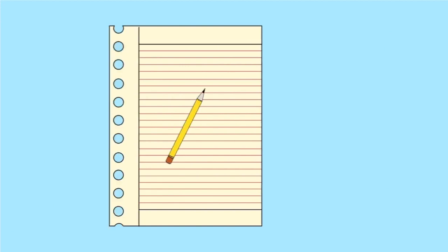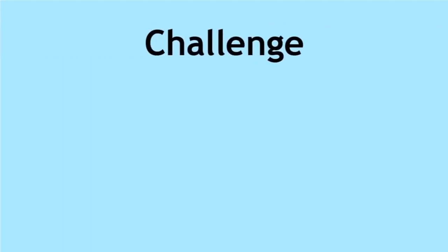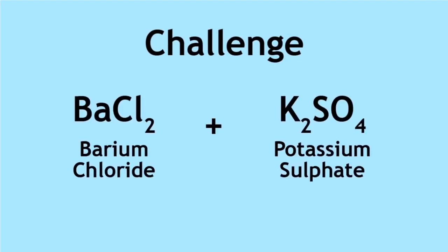Are you ready for a challenge? Let's grab a pencil and a piece of paper. Predict the products for the double displacement reaction of barium chloride and potassium sulfate and write the reaction equation. Remember to include the state symbols and to fully balance the equation.